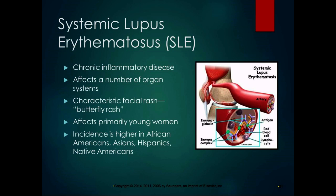Lupus primarily affects young women, and cases are getting identified earlier, which improves prognosis. There is higher incidence in African Americans, Asians, Hispanics, and Native Americans. It usually manifests between the ages of 10 and 50. No specific cause has been established, but it appears to be multifactorial, including genetic, hormonal, and environmental factors.